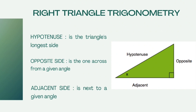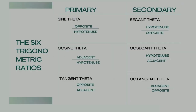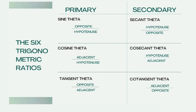So right now, we are ready to identify the 6 trigonometric ratios in a right triangle. As you can see, the 6 trigonometric ratios contain primary and secondary. In primary: sine theta is equivalent to opposite over hypotenuse, cosine theta is equivalent to adjacent over hypotenuse, and tangent theta is equivalent to opposite over adjacent.